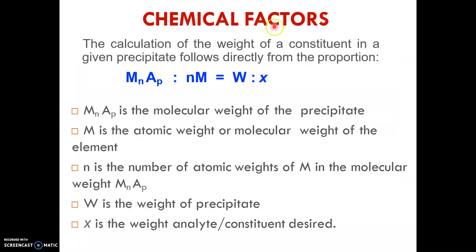Using the chemical factor method, the calculation of the weight of the constituent in a given precipitate follows this equation: the molecular weight of the precipitate is related by the atomic or molecular weight, where n is the number of moles, w is the weight of the precipitate, and x is the weight of the analyte with the desired form.